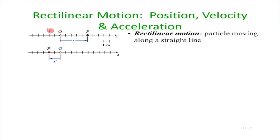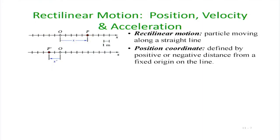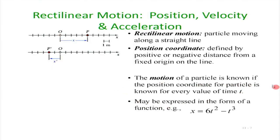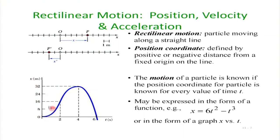In rectilinear motion, a particle moves along a straight line. We keep one point O as an origin and track the coordinate of point P with respect to this origin. The point can be on the plus or minus side. The motion of a particle is known if its position coordinate is known for every time. When we know the time history of the particle, we can plot how the position varies as a function of time — this curve is called the particle trajectory.